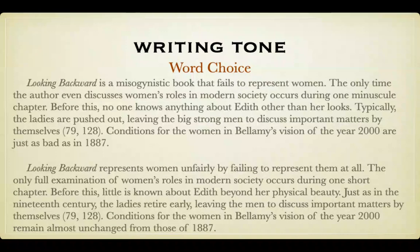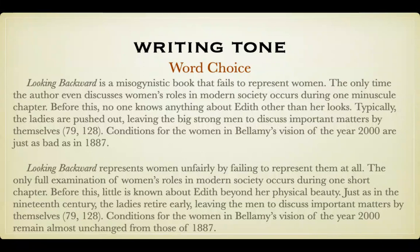Pause this video and read the following two paragraphs, then determine which one seems more reliable. In the first paragraph, the author chooses words that communicate an aggressive, disapproving, and almost angry tone. Not only does this type of writing hurt the credibility of the author, it could also anger the audience. The second paragraph does a much better job of communicating its message in a specific yet reasonable way.